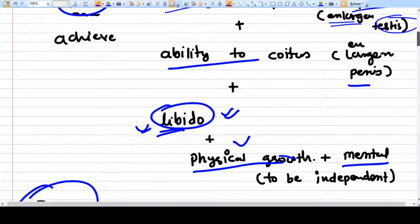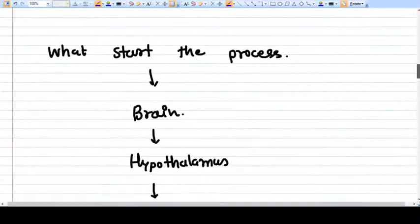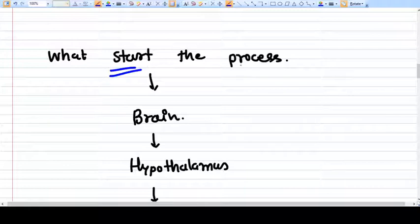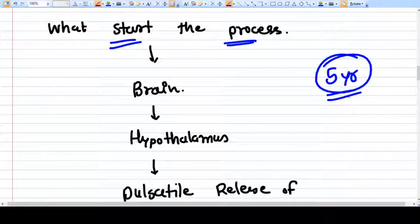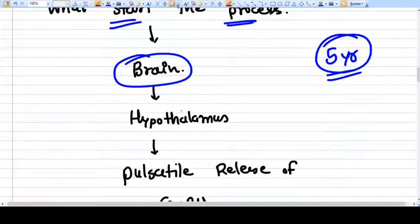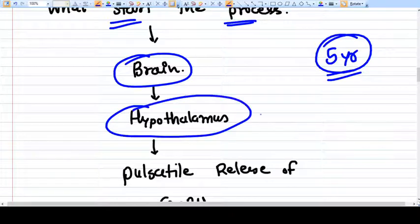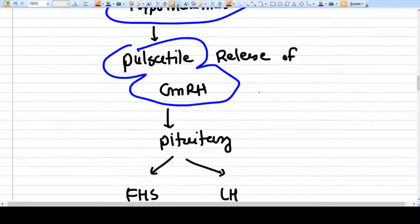What starts this process of puberty? Puberty is a process, not a time. Puberty is a process of around five years. The brain starts the activity first - the hypothalamus will start releasing pulsatile GnRH that will make the pituitary release FSH and LH.